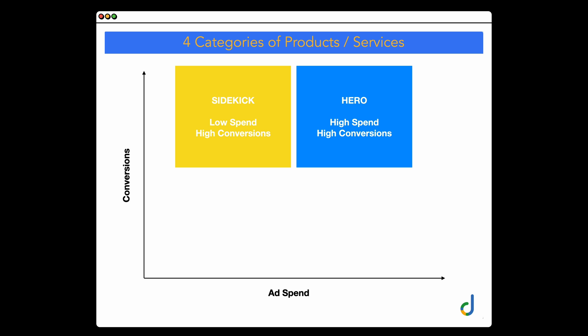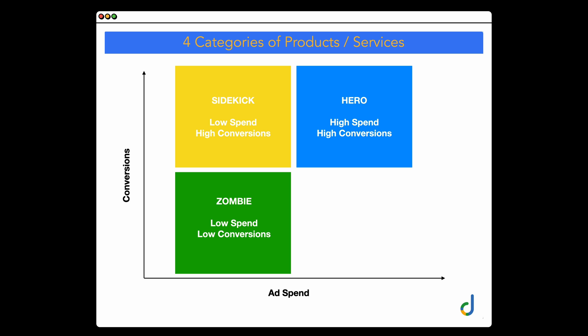What we want to see with sidekick products is that if we break them out into a separate campaign and increase spending — say from $100 a day to $200 a day — do they still get the same amount of conversions? Then we have our zombie products, and these are the products which we just don't know about. They've got a low spend and a low conversion rate, so we don't know whether they will convert because Google isn't sending any traffic to them.